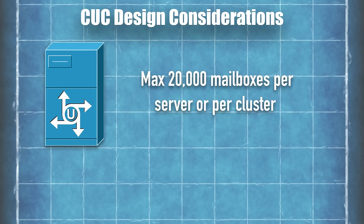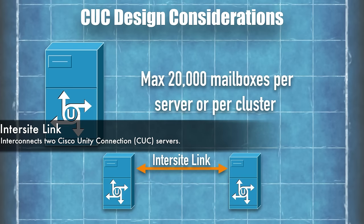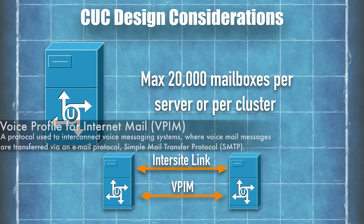So why buy a second Cisco Unity Connection server if it doesn't increase mailbox count? It does increase capacity in another way — instead of 250 virtual voicemail ports, you can have 500 simultaneous connections. It also provides redundancy: if one server goes down, the other takes over. We can also integrate a CUC server with another messaging system. Cisco calls the logical link between CUC servers an inter-site link. Another way to link CUC servers — or link a CUC server to another messaging system — is VPIM, Voice Profile for Internet Mail, which uses SMTP to send voicemail messages between servers.